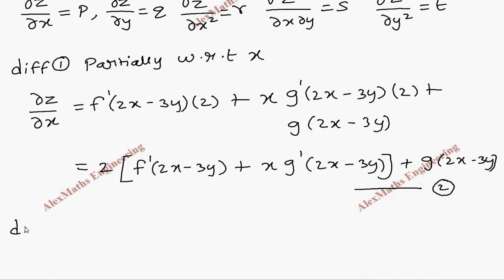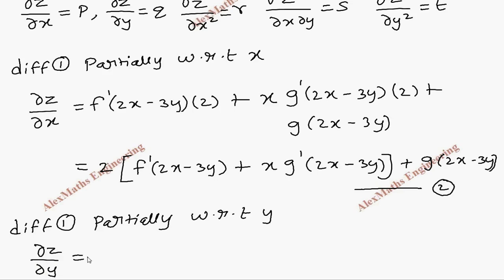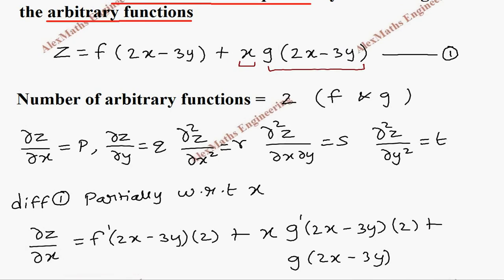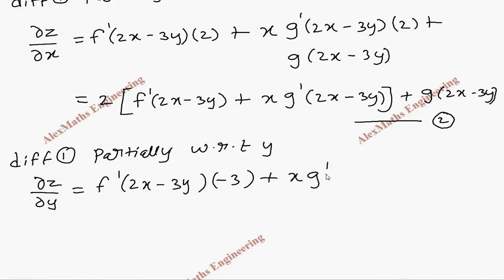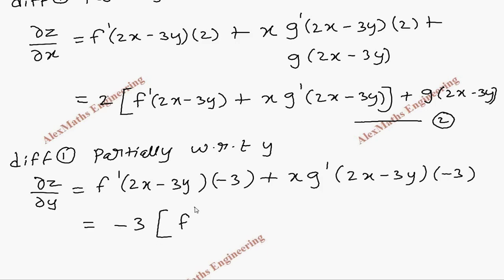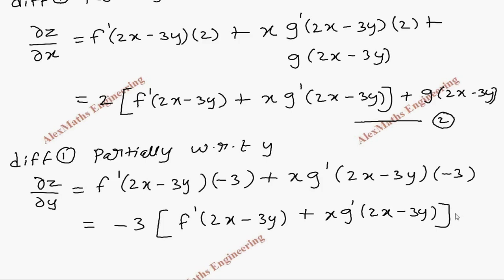Then once again, we take the first expression and differentiate it partially with respect to y. So z will become dou z by dou y, and f becomes f dash of 2x minus 3y. As per the chain rule, we multiply by minus 3. For the next term, this is again a product rule, but x is treated as a constant, so x is kept as it is. g derivative is g dash of 2x minus 3y, and the derivative of 2x minus 3y is minus 3. Now we find minus 3 is common, so we take minus 3 common: f dash of 2x minus 3y plus x into g dash of 2x minus 3y. Let's keep this as the third expression.